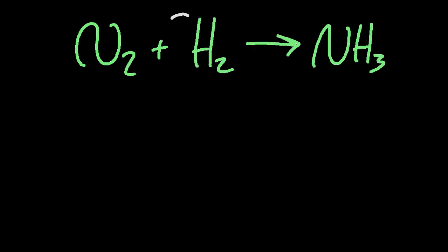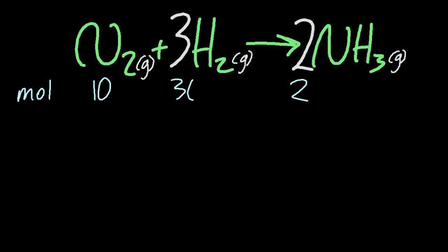This is the Haber process. You need to learn this equation. It produces ammonia. One mole of nitrogen needs three moles of hydrogen to make two moles of ammonia. The ratio works with the coefficients. But it's not just moles. It's also volumes that work the same. 10 decimeters cubed of nitrogen reacts with 30 decimeters cubed of hydrogen to make 20 decimeters cubed of ammonia.